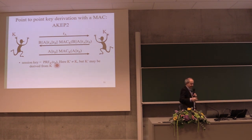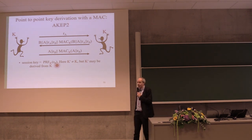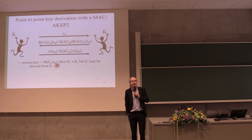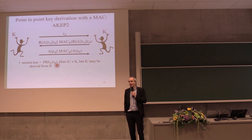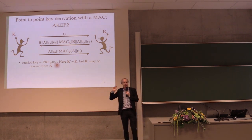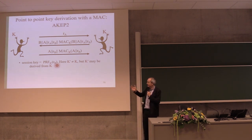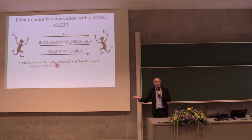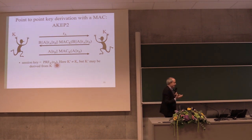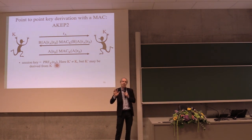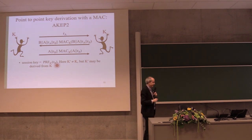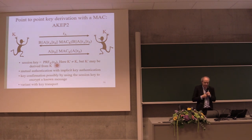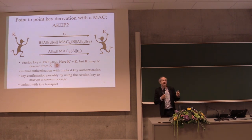This protocol is important because it was the first for which there was actually a proof of security. Before you can prove a protocol secure, you first have to define what it means for a protocol to be secure — that definition alone is several pages. It took about 15 years of research before people could write down what security means for such a protocol, and then there is a 12-page proof. The security definition says you can't distinguish an agreed session key from a random string afterwards — that's how security is defined.